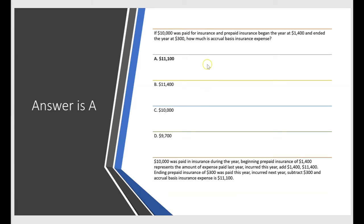Notice the prepaid expense account is going down from $1,400 to $300. That means you incurred more expense for insurance this year compared to what was paid. When the prepaid expense drops for the year, it means you incurred more expense this year than you paid.